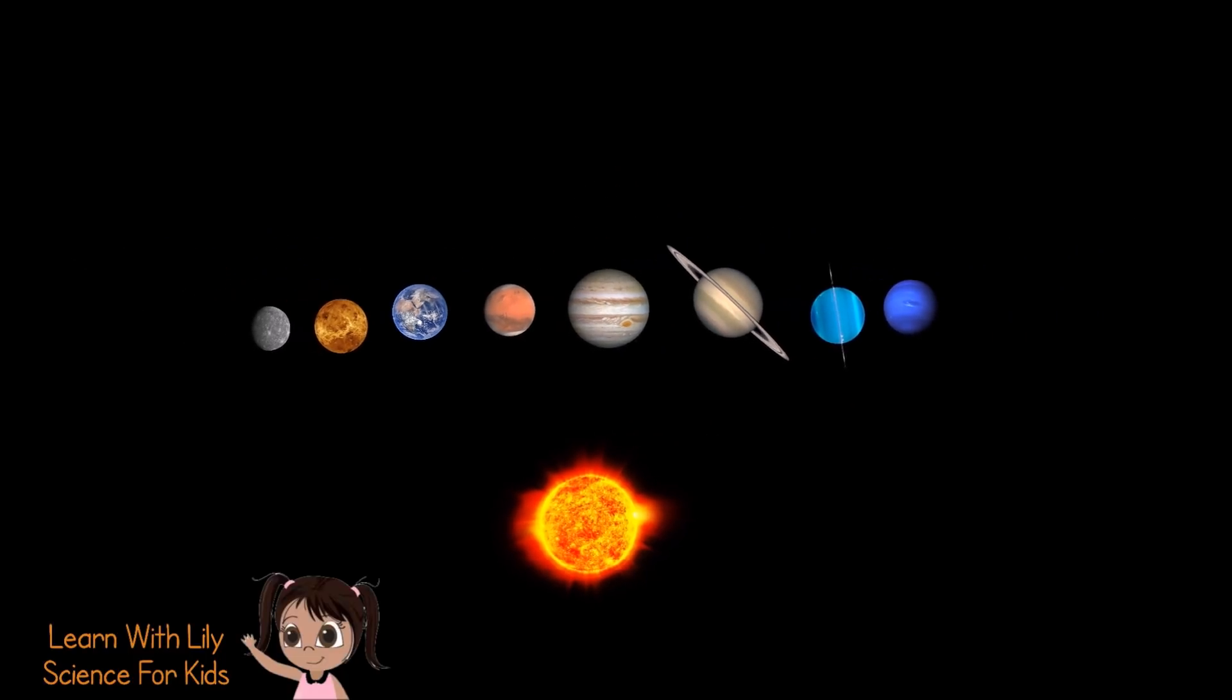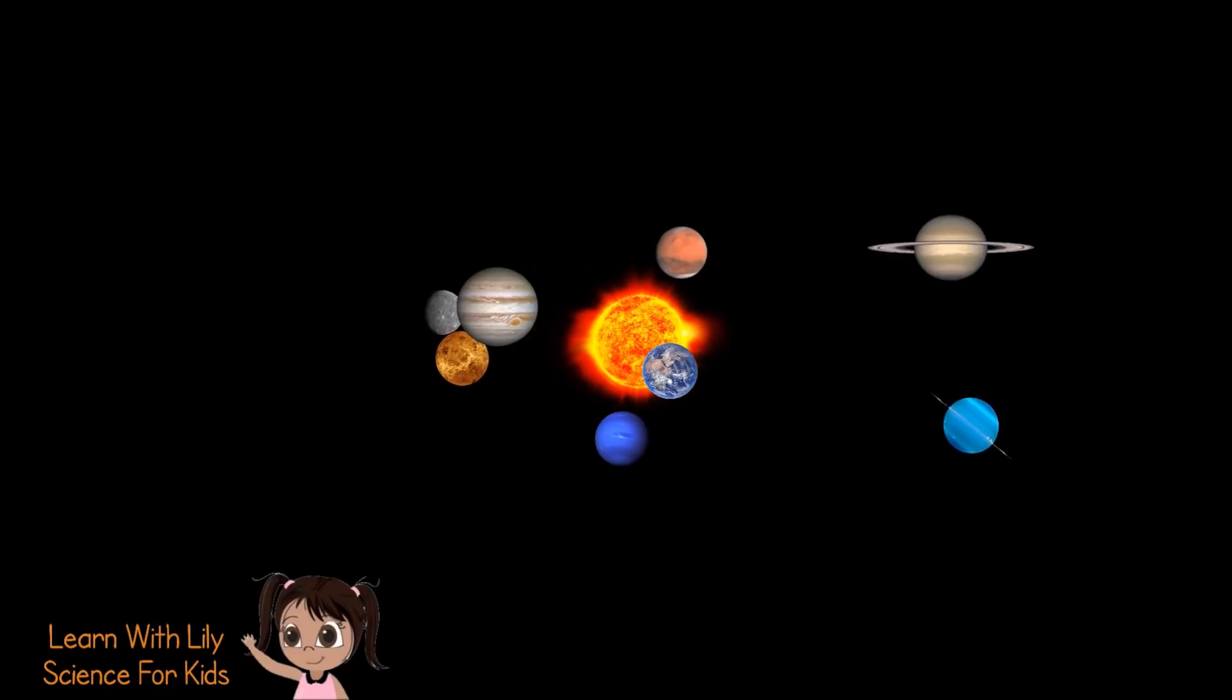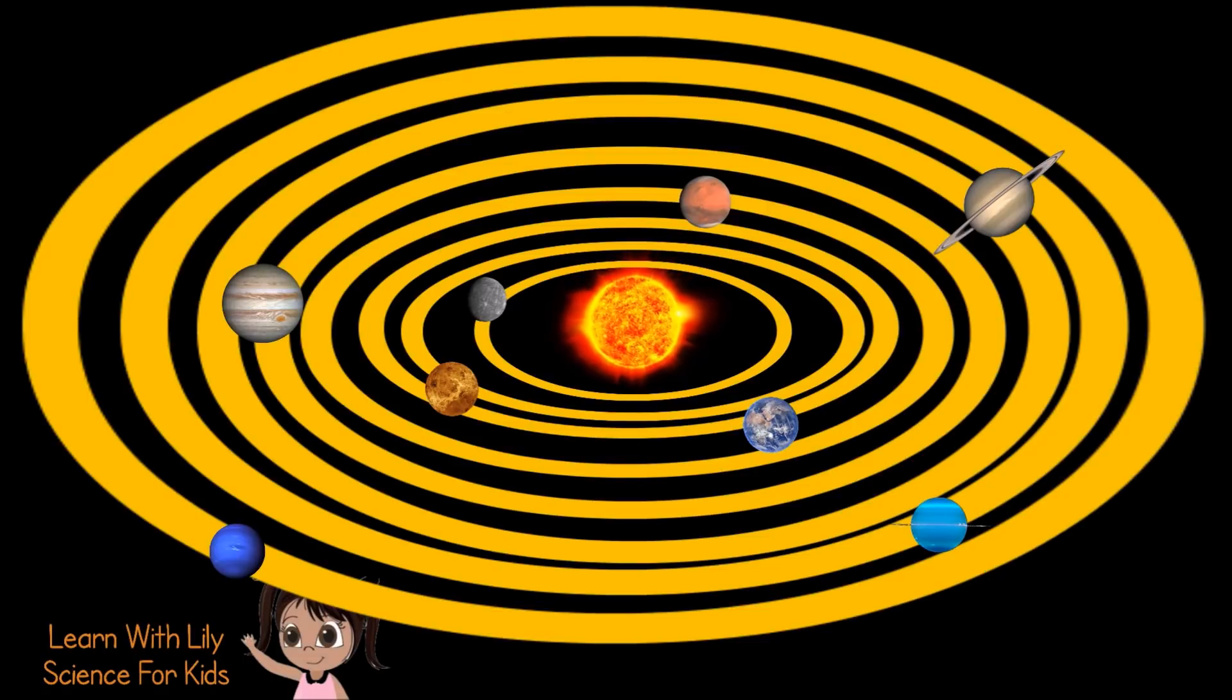The planets orbit around the Sun. The Sun is in the center of our solar system. The planets travel around it in a circular path. Over here you can see the path they take around the Sun.